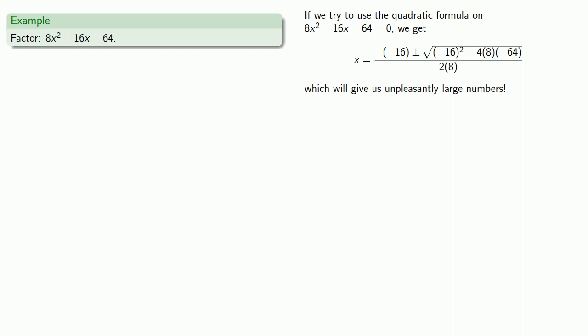A useful idea to keep in mind is to try the easy things first. In this case, one of the easy things is to recognize that every term has a factor of 8, and so we can remove this common factor.